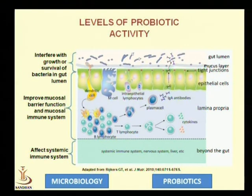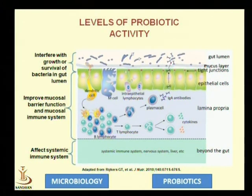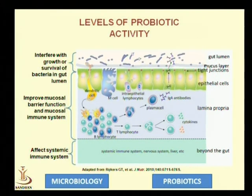The second level of probiotic activity is improving the mucosal barrier by interacting with columnar epithelial cells present in the intestine. Probiotics induce the production of mucins; these mucins dissolve in water and form a mucosal layer, which again inhibits the entry of pathogens into the epithelial cell. Probiotics also enhance the immune system.